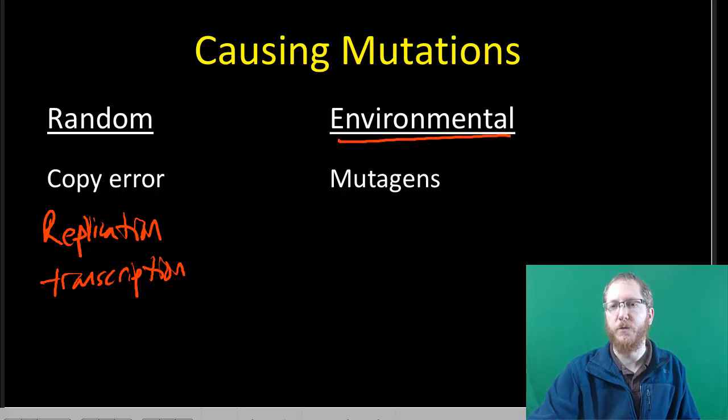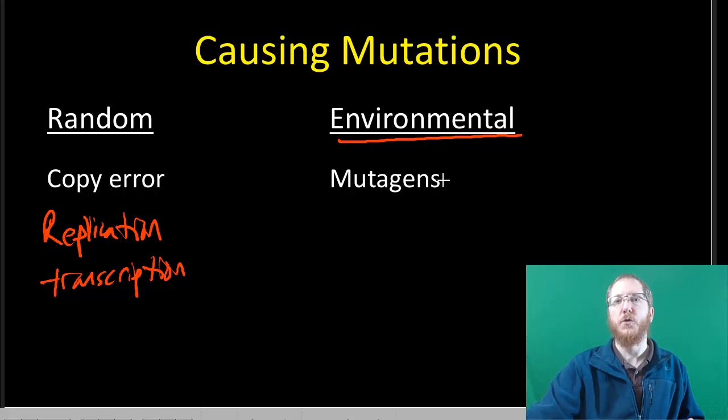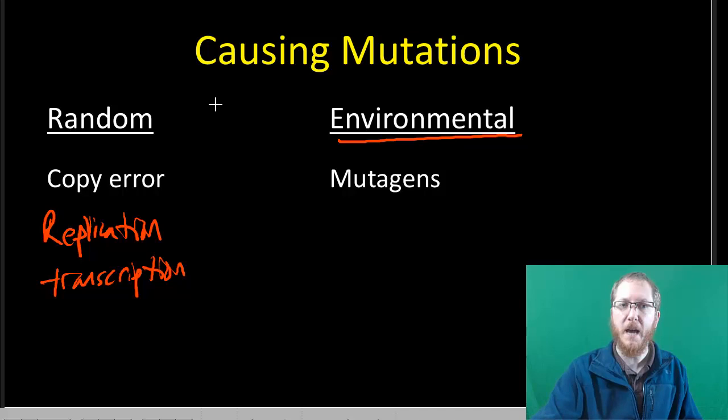The environmental cause is more interesting. This one is in response to what we call mutagens, which are substances or conditions that tend to lead to a higher rate of mutations. You can try to avoid being around mutagens, and by avoiding them, you can minimize at least some of your risk of mutation — not get rid of it entirely, because you'll always have some random mutations, but you can at least minimize it.